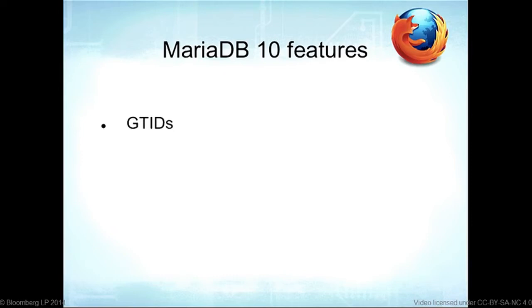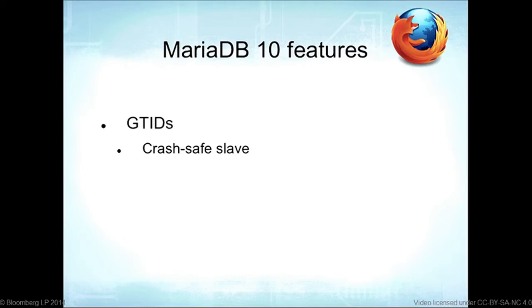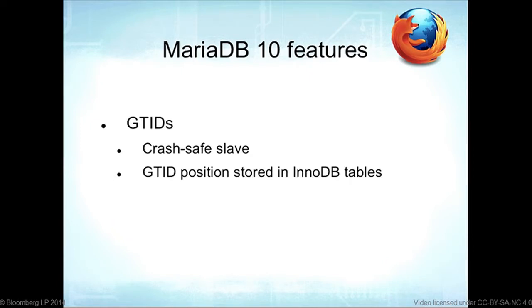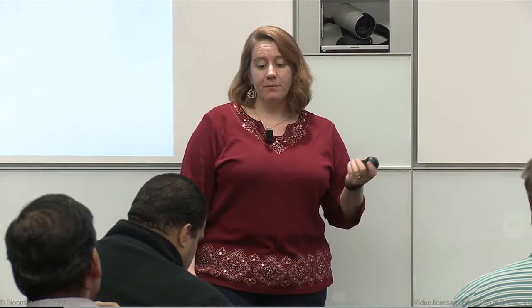MariaDB 10 has GTIDs — Global Transaction IDs — differently implemented from MySQL's 5.6 version. One major benefit: crash-safe slaves. Your slave is currently not crash-safe because slave position info is stored in a master.info flat file. With MariaDB's GTIDs, the GTID position is stored in InnoDB tables, which are crash-safe. MySQL 5.6 and up also has a way to do this, but it's a leapfrog game between the two databases.